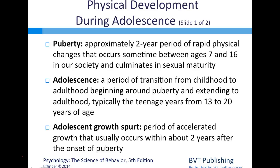In girls, puberty can occur sometime between ages 7 and 14, with an average age of around 10. Boys typically enter puberty about two years later than girls, at about age 12, with a normal range of 9 to 16.